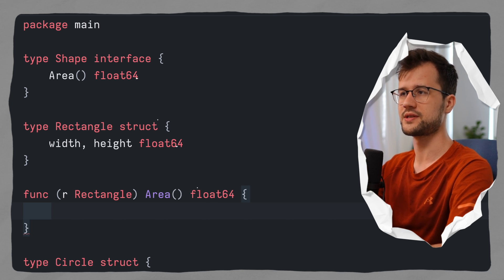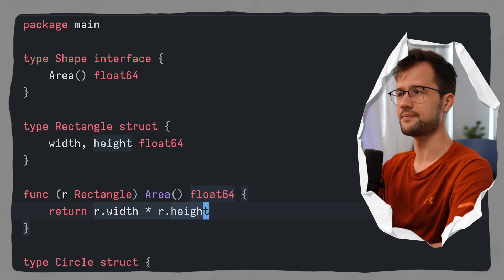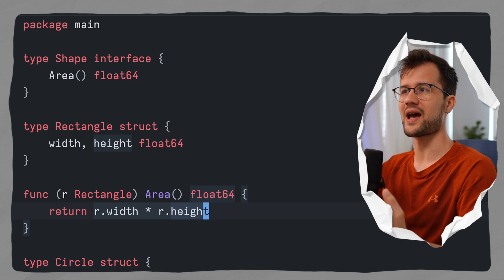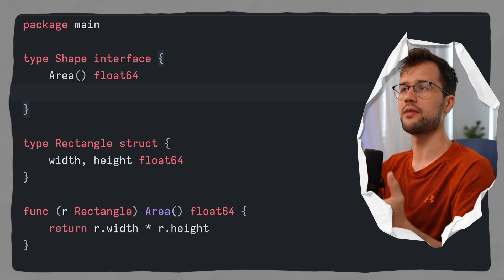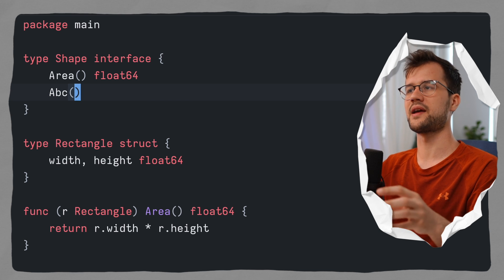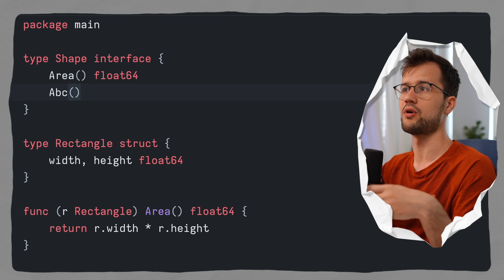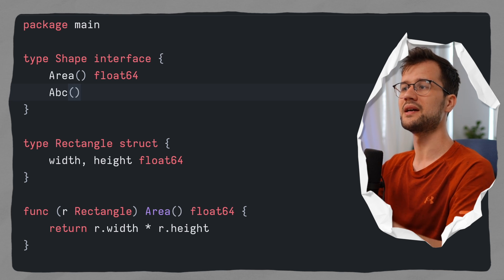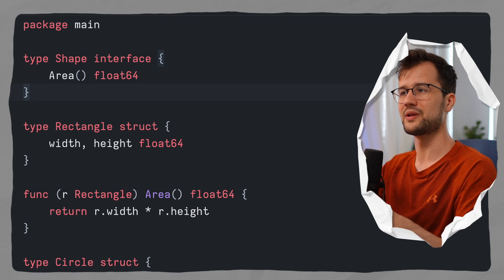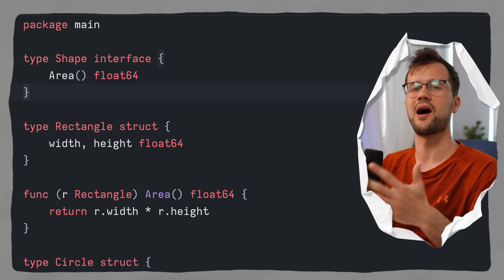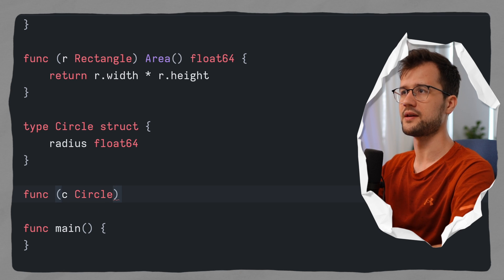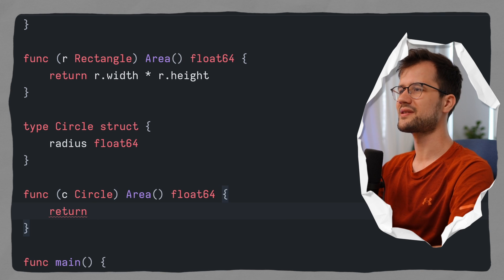We implement the logic by returning r.width times r.height — the basic area calculation of a rectangle. Note that if we add a new method like abc to the shape interface, the rectangle no longer satisfies the contract because that method is missing. But remove abc and since the area method is implemented, the rectangle is now a shape. Let's do the same thing with our circle, defining a struct method and calculating the circle's area.